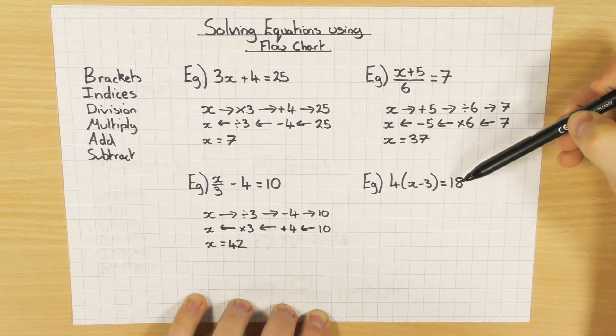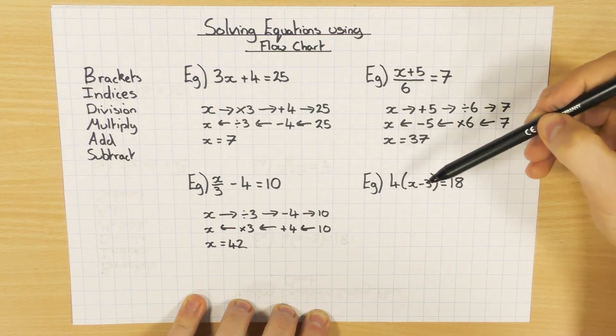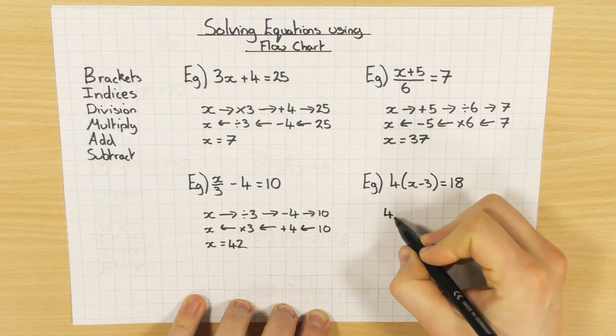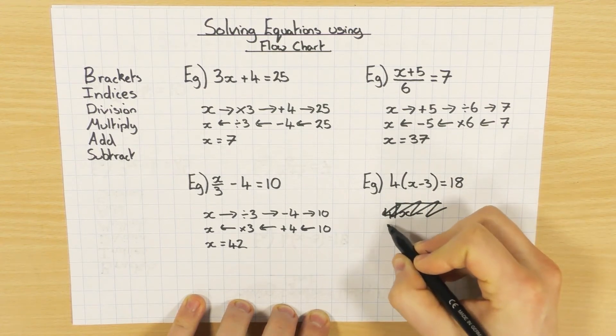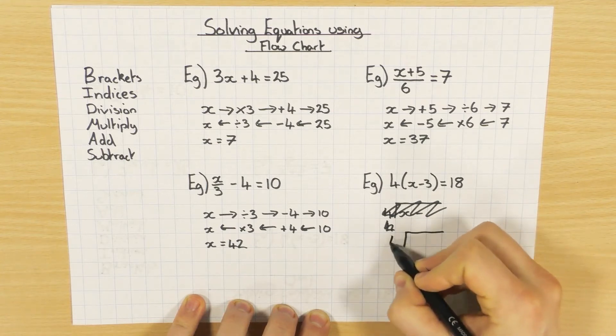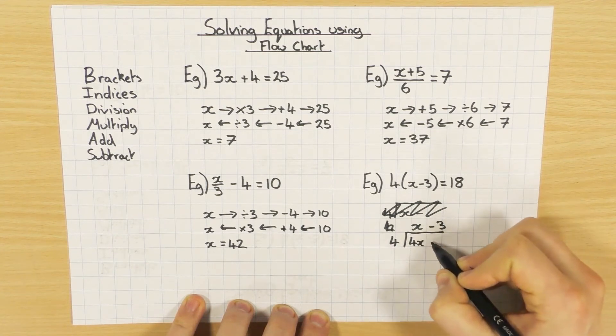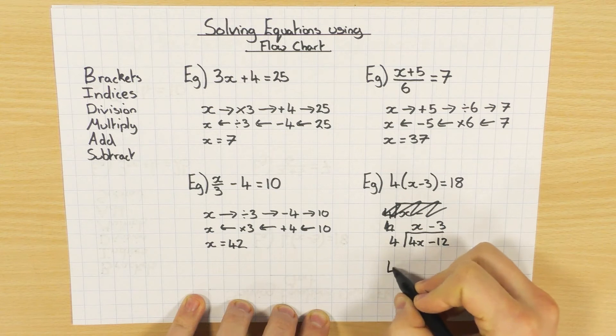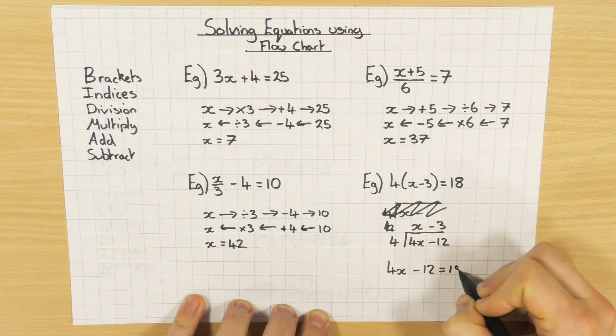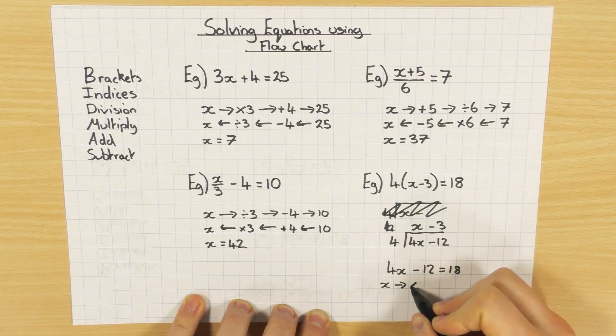Now you can go straight into the flowchart when you have a brackets question. However, I recommend that you expand the brackets first, because sometimes the numbers can get a little bit horrible. If you've got a calculator it's not a problem, but in a non-calculator you want to make this as easy as possible. So I would expand this first. So 4 on the outside, x minus 3 at the top, 4 times x is 4x, 4 times minus 3 is minus 12. So I'm just going to expand that bracket first to 4x minus 12. So 4x minus 12 equals 18.